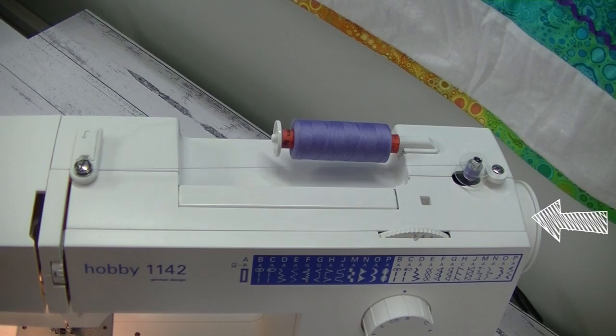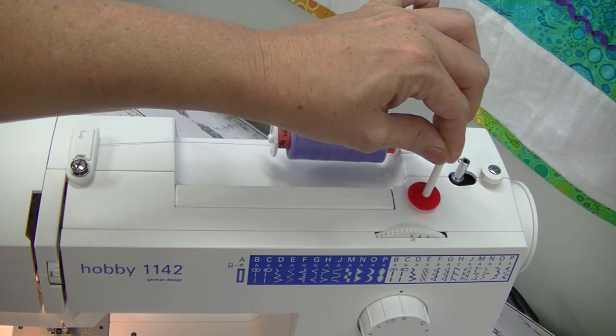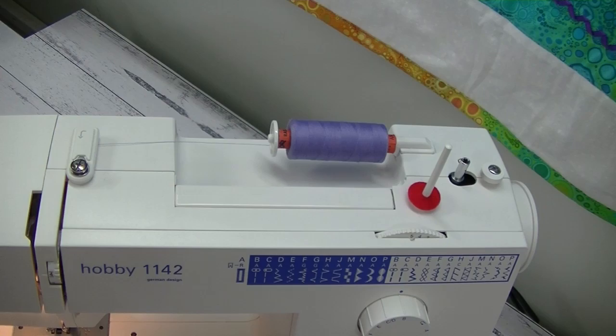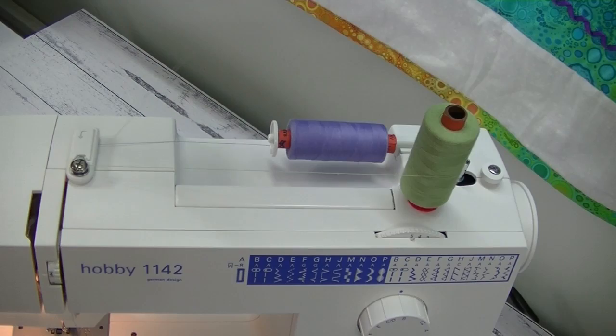If you would like to wind your bobbin while your machine is still threaded, you can do that with the extra spool pin that's provided in your pack. So you can place that into the hole that's on the top of the machine, push that into place. I then pop the felt pad onto the top of the spool pin to stop any damage to your machine, place your thread onto the extra spool pin. Once you've done that, it's simply a matter of following the same process as we did with the horizontal wind. Move your thread around, and then put it into the bobbin, and go from there.